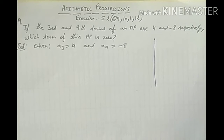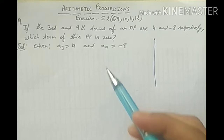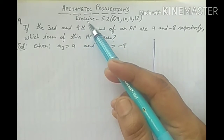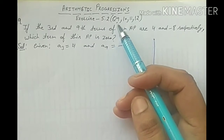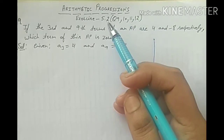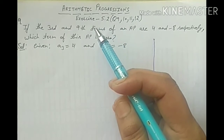Good morning to all my dear friends. I think you all are fine. Students, our topic is arithmetic progressions, Class 10th NCERT book. Today we are going to solve question numbers 9, 10, 11, and 12 of Exercise 5.2. So let's start.